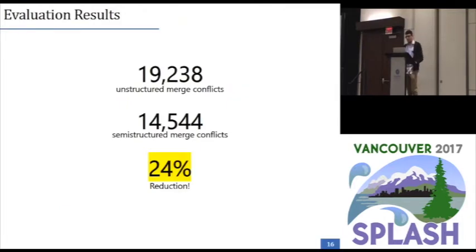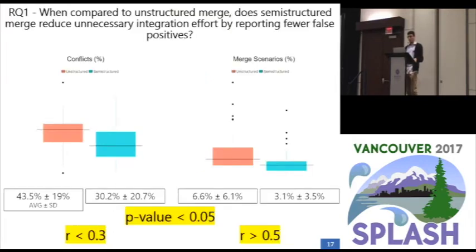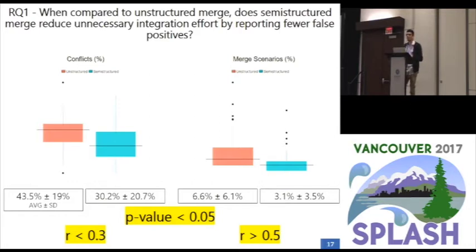Considering the aggregate scenarios of all projects in our sample, Semi-Structured Merge reduces the number of reported conflicts by 24%. To answer our first research question about integration effort, we compare the number of additional false positives of each merge strategy. We observe that the average number of Semi-Structured Merge additional false positives is inferior to Unstructured Merge, and Semi-Structured Merge also had fewer merge scenarios with additional false positives. Statistical tests show that the merge strategies present a statistically significant difference in terms of merge scenarios with additional false positives with a large effect size, and also in terms of additional false positives with a medium effect size.